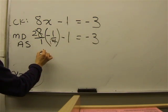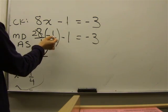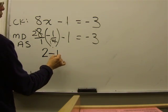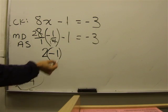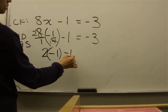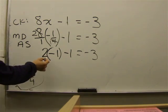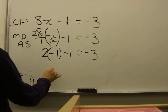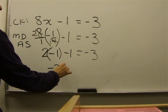Bring this down. 2 over 1 is the same as saying 2. Negative 1 over 1 is the same as saying negative 1. Now, bring everything else down. Negative 1 equals negative 3. I'm sorry, 2 times negative 1 is negative 2. Bring everything else down.